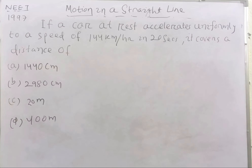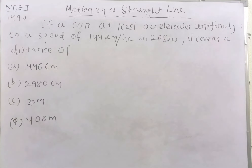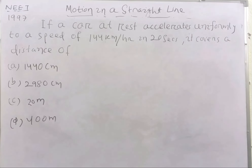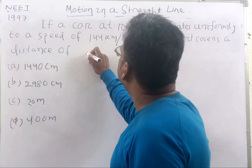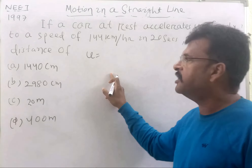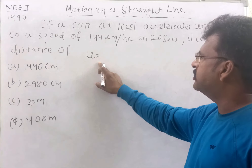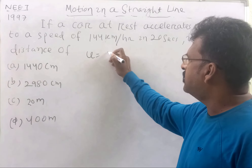Students, a question from the 1987 exam was asked in the Motion chapter. If a car at rest accelerates uniformly to a speed of 144 km per hour in 20 seconds, it covers what distance? So students, the car at rest accelerates uniformly to a speed of 144 km per hour in 20 seconds — find the distance covered.